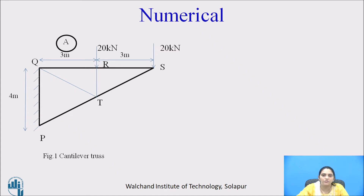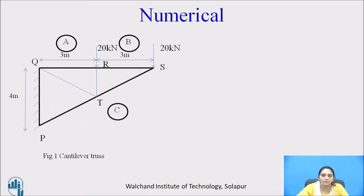First, give a name to each space. Space A is shown in the figure, this is space B, and this is space C. In between space C and space A there is a support reaction at the fixed support. Since members also divide the space, we give names to those spaces as well: space D, space E, and space F. The space diagram is now complete.